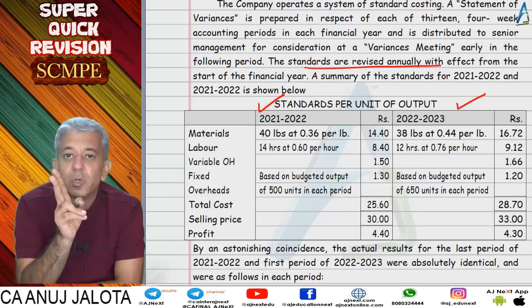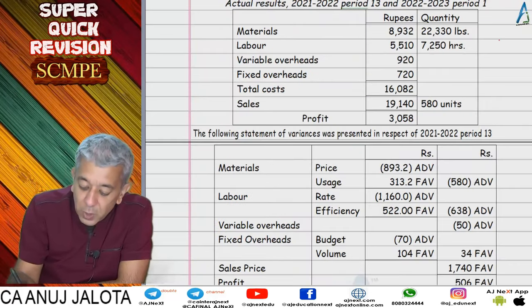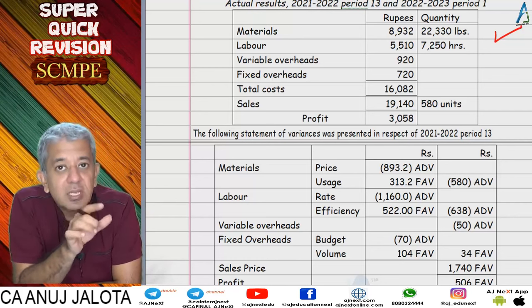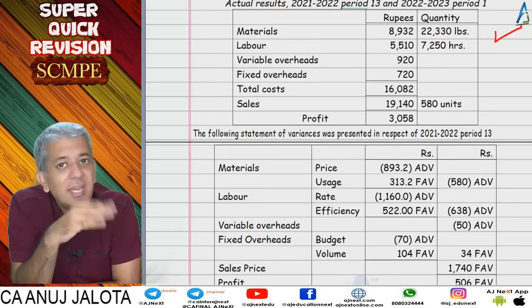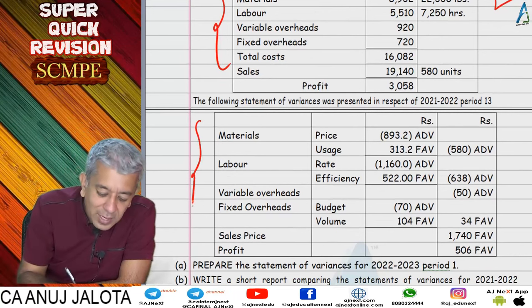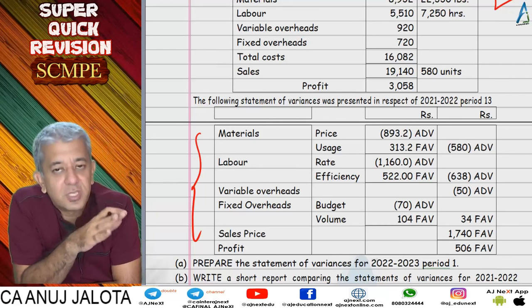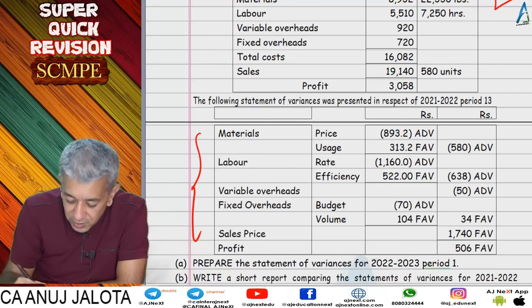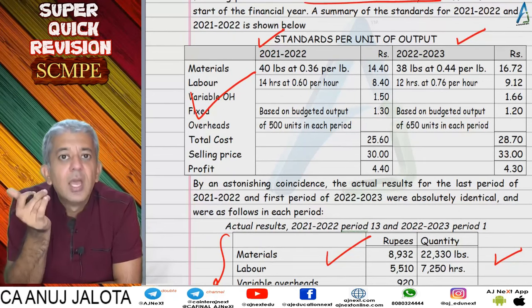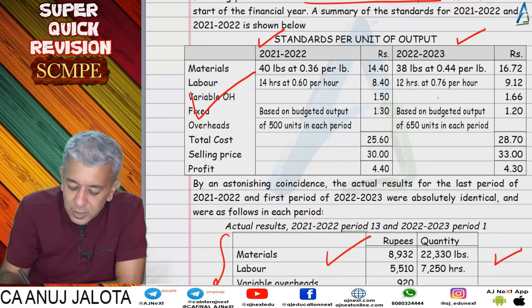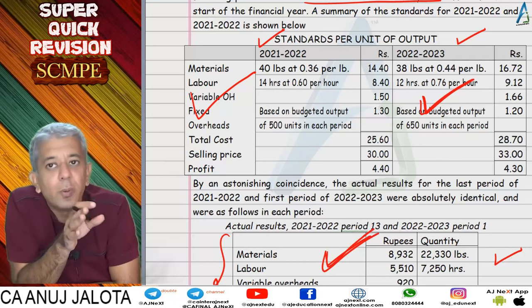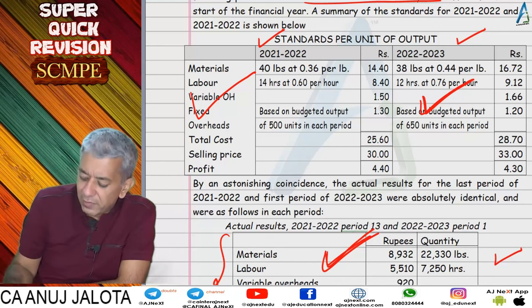The question had already provided a statement of variances for the first year, and asked us to make one for the second year. For the first year, they compared that period's standard with that period's actual. We had to compare standards of 2022-23 with actual data of 2022-23. Since actual data was common, we made the statement of variances for this year. One statement was given by the question for last year; we built one for this year.